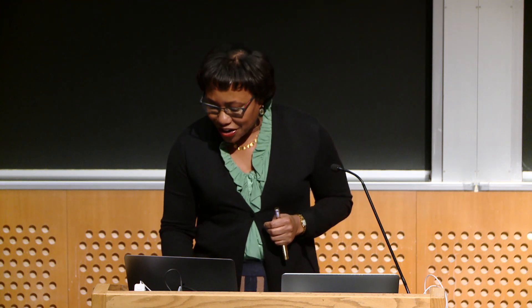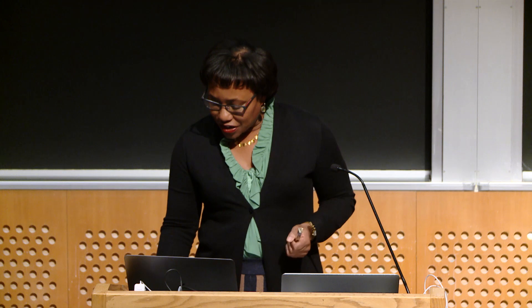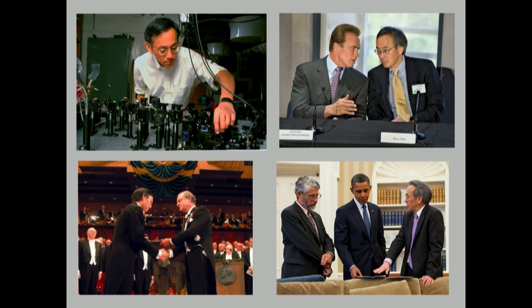At Stanford, Chu's research interests expanded into biological physics and polymer physics at the single molecule level. He studied enzyme activity and protein and RNA folding using techniques like fluorescence resonance energy transfer, AFM, and optical tweezers. His polymer physics research used individual DNA molecules to study polymer dynamics and their phase transitions. He continued researching atomic physics as well and developed new methods of laser cooling and trapping.